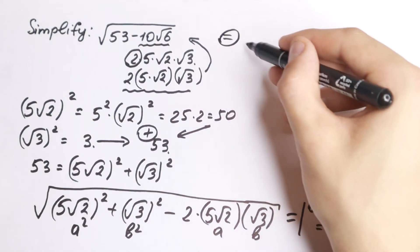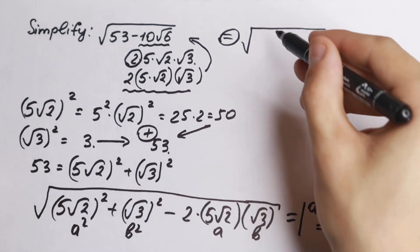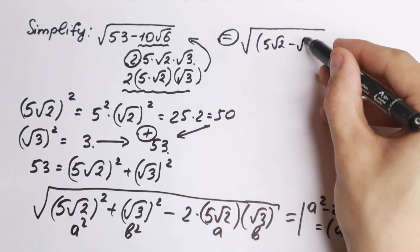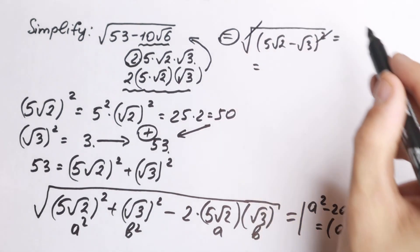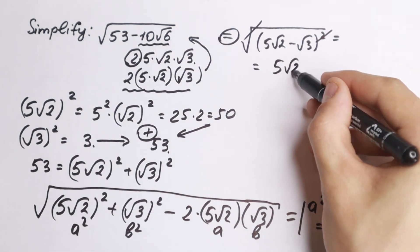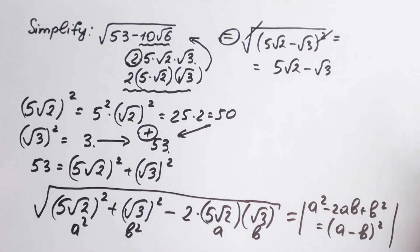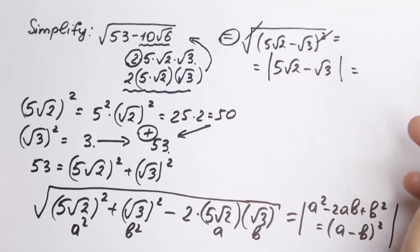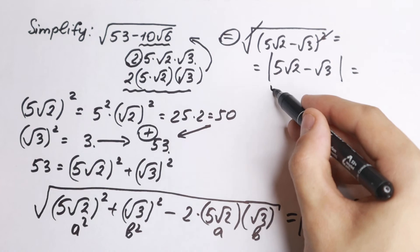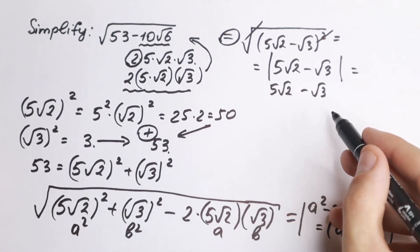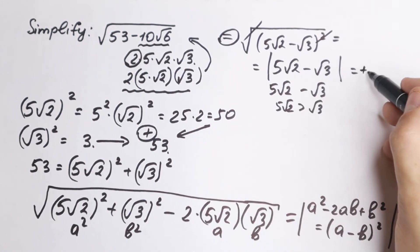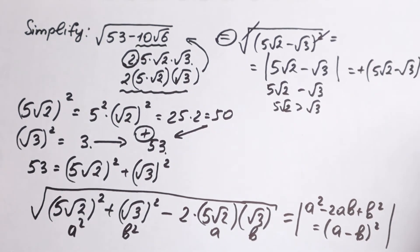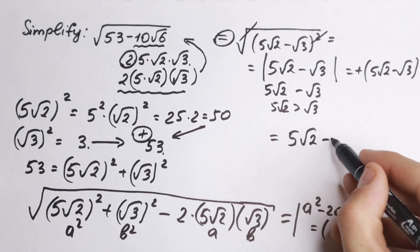So we have the square root of (5√2 − √3)². Many students know you can cancel the square and the root sign to get 5√2 − √3, but every time we need to write the absolute value, because we don't know the sign of the expression — it could be positive or negative. So let's check: 5√2 is greater than √3, so the expression is positive, and the absolute value simply gives us 5√2 − √3. This is our final answer.